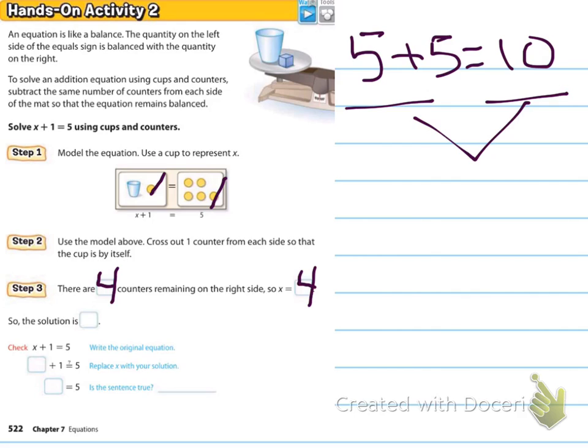And so there are 4 counters remaining on the right side. So x equals 4. So they're saying that if I originally had on my balancing scale my x and my counter and then over here I have 5 counters. And we said, okay, we're going to get rid of one counter from each side. And what are we left with? Now, it's still in balance. As long as I take one thing off one side and one thing off the other, I'm still in balance and x is balancing out with the 4. So the 4 counters are the solution. And then if you come down and check yourself, if you know that it's x plus 1 equals 5 and we're saying that x equals 4, then when I come over here and I plug in 4 plus 1, it should equal 5. So 5 equals 5. Checkmark. Is this sentence true? Absolutely.